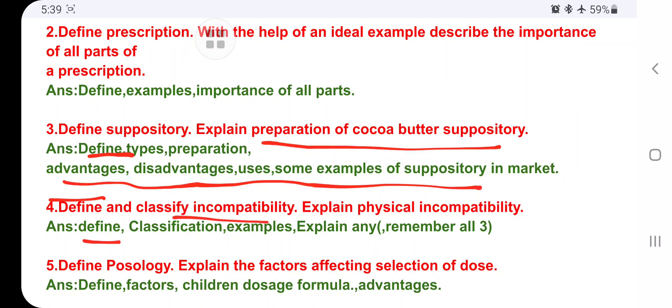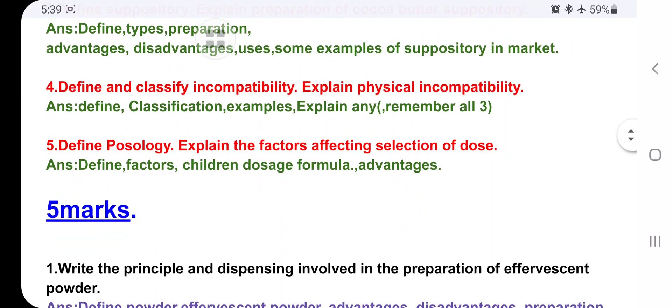Define and classify incompatibility: Explain physical incompatibility. You have to define what is incompatibility, write classification and examples. You have to know all the three: physical, chemical, and therapeutic incompatibility. These all you have to remember because from these three incompatibilities, one will be fixed in our examination. Next, posology: Explain the factors affecting selection of dose. Define posology, write the factors, child dosage formula - two formulas are enough here - and advantages.